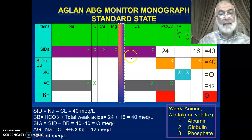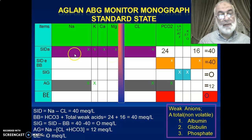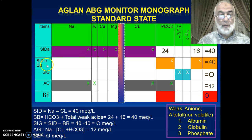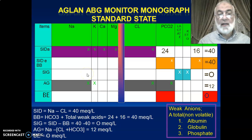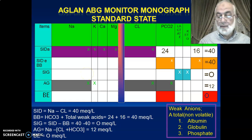The extracellular compartment is characterized by electroneutrality, which means that all the cations equal the anions. We have different monitors like strong ion difference, base excess, strong anion gap, and anion gap. All of these positions, when we study them together, they are complementary and are of importance for diagnosis.